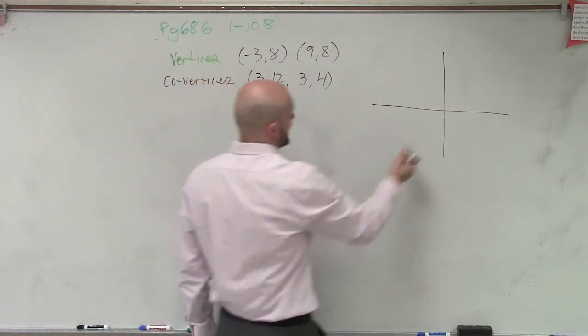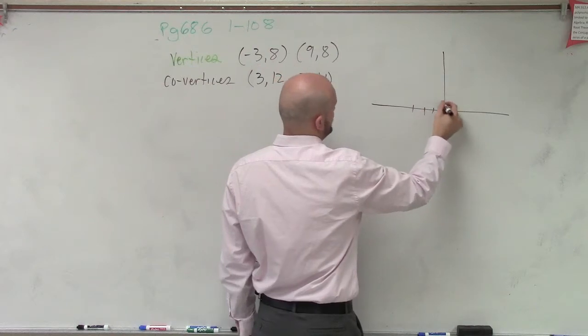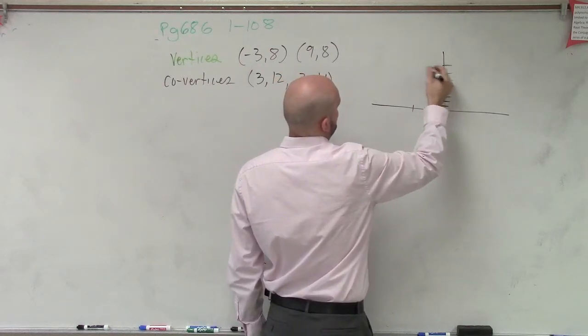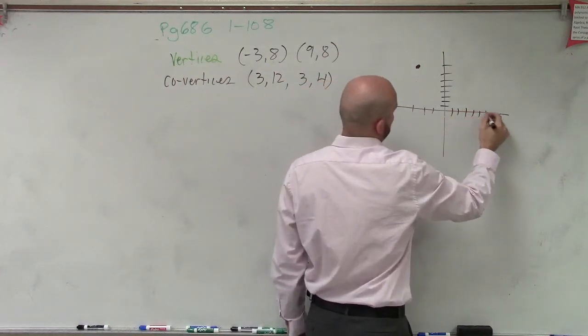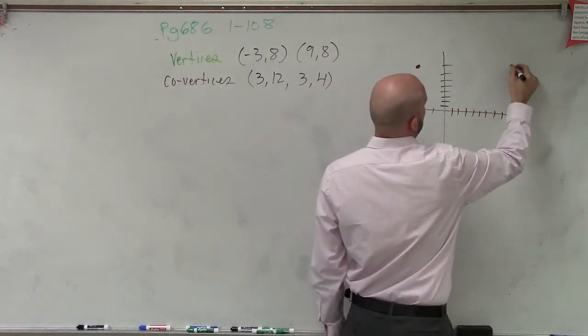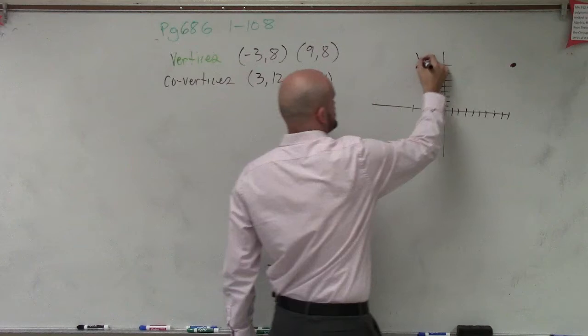So I go over negative 3, 8, 1, 2, 3, 8, 1, 2, 3, 8, 8, 2, 9, 8, 1, 2, 3, 4, 5, 6, 7, 8, 9. OK? So those are your two vertices.